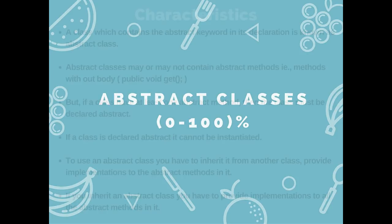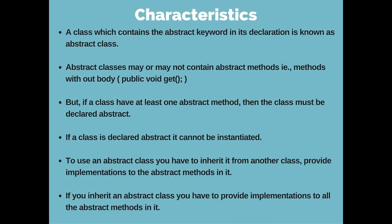All abstract classes use the keyword abstract. Abstract classes can contain non-abstract methods as well as abstract methods. But if a normal class has at least one abstract method, it must be declared as abstract. Abstract classes cannot be instantiated, which means you can't create an object for an abstract class.